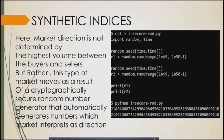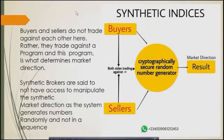In the synthetic indices market, the side with the highest volume does not determine market direction. Instead, the cryptographically secure random number generator — which is a program — determines market direction. It passes those generated numbers to the market, and the market interprets them as direction to follow. Unlike forex where buyers and sellers trade against each other, in synthetic indices the buyers and sellers trade against a program, and this program determines the market direction.